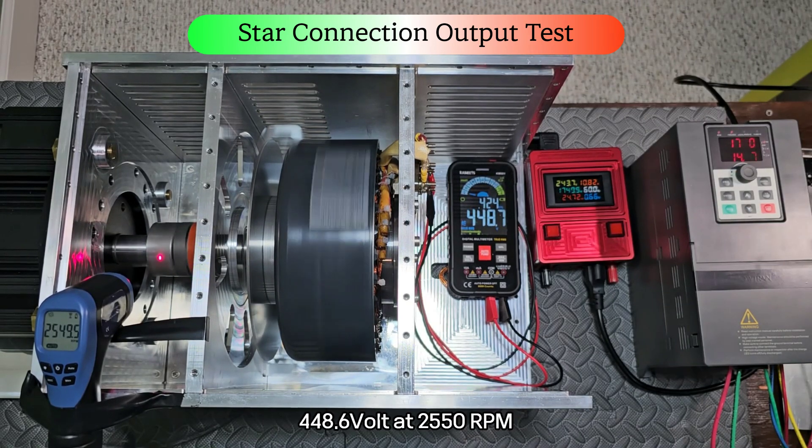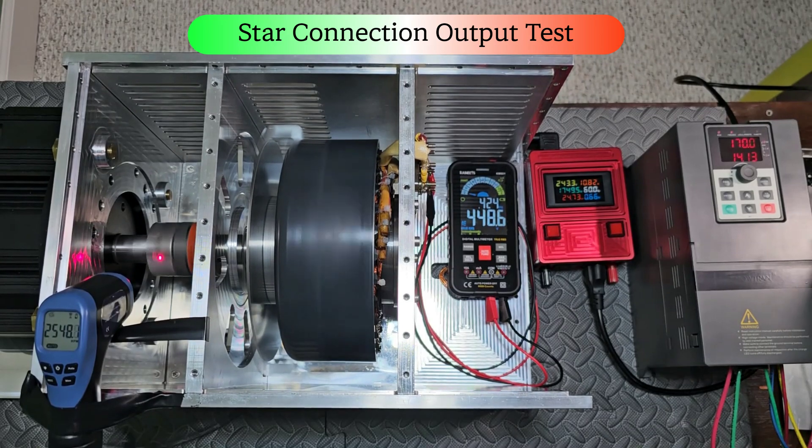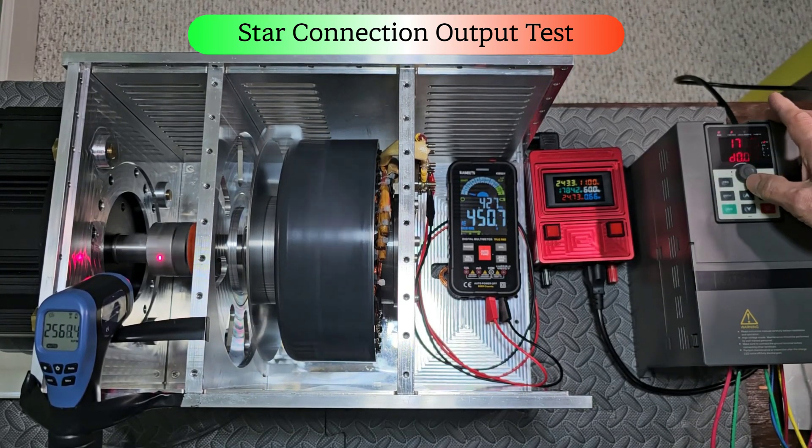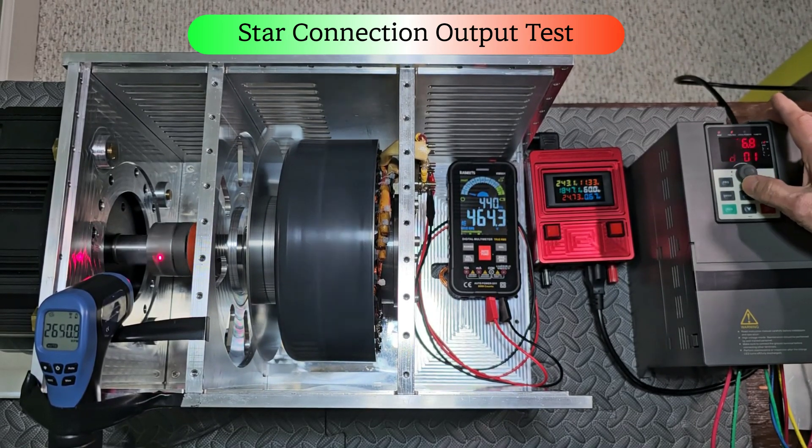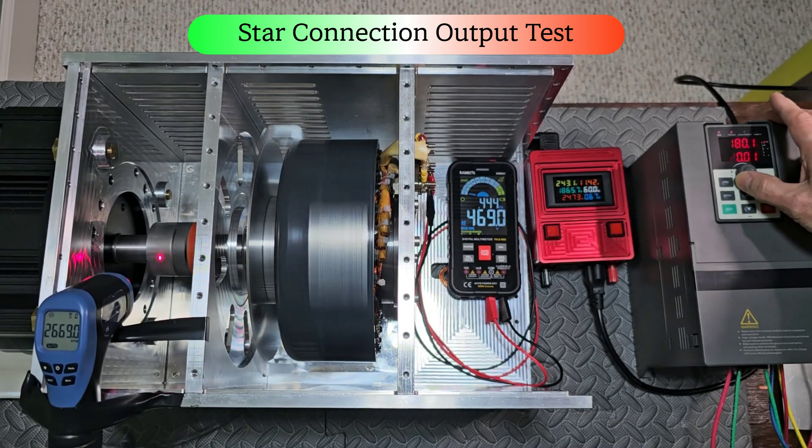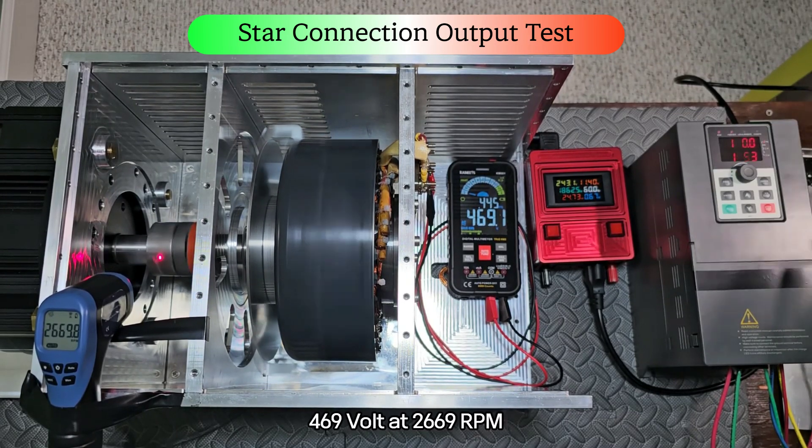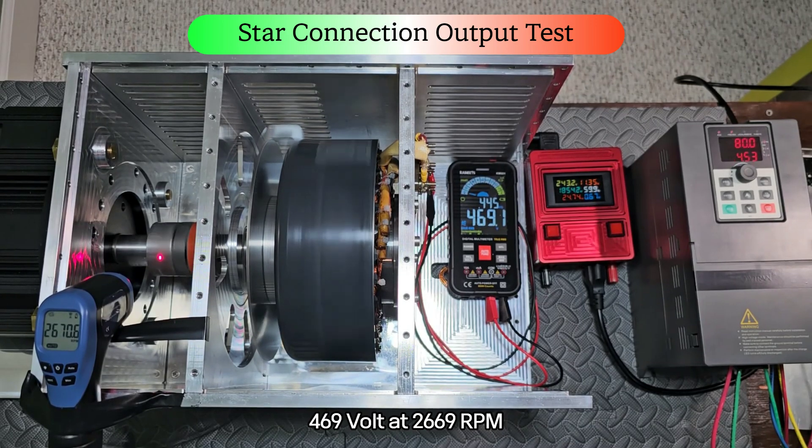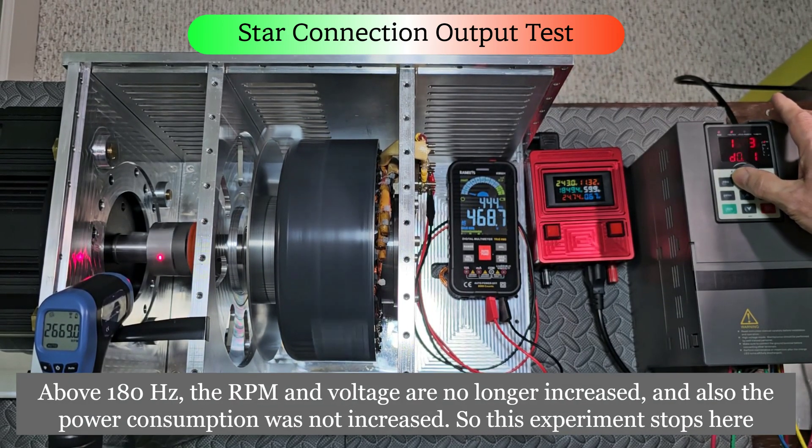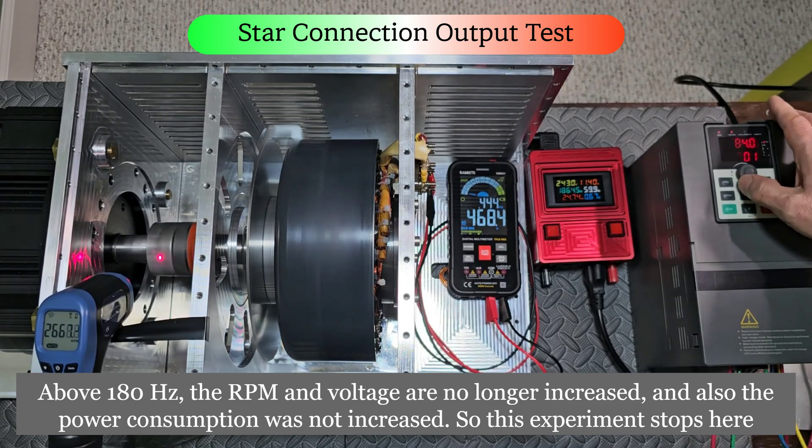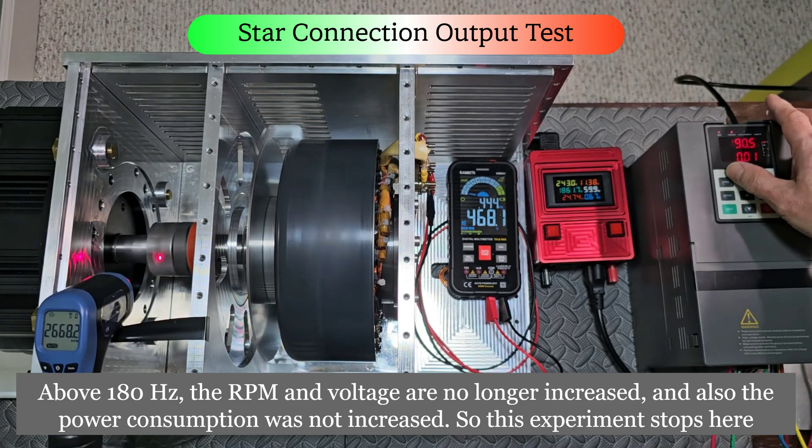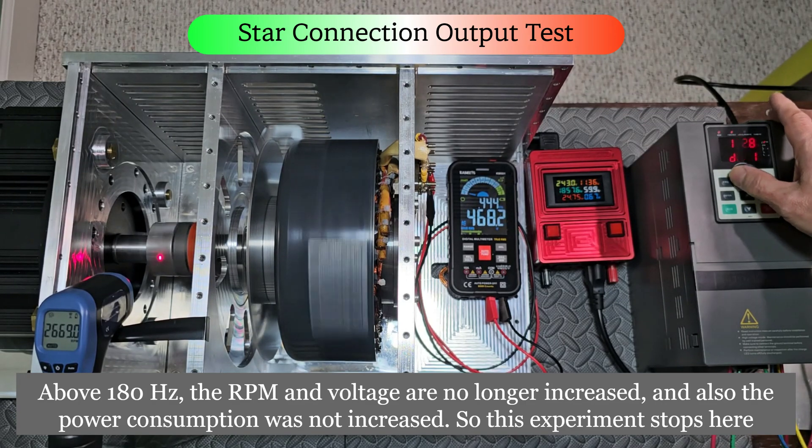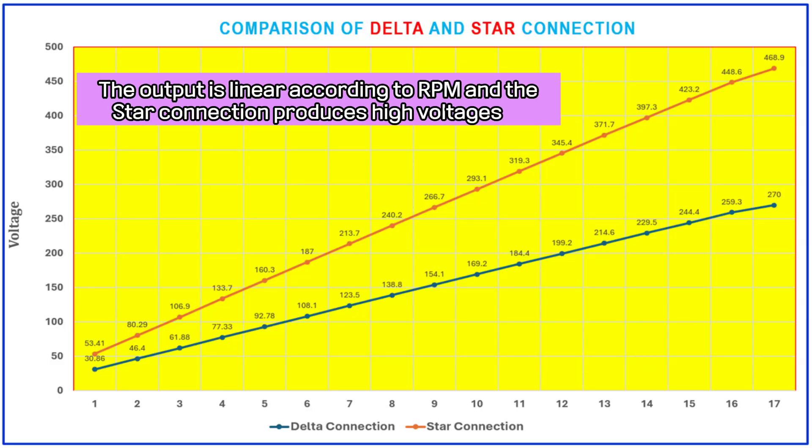The output is 423.2 volts at 2400 RPM, 160 hertz. System uses 1494 watts now. 448.6 volts at 2550 RPM. 469 volts at 2669 RPM. And also the power consumption was not increased. So this experiment stops here. The output is linear according to RPM, and the star connection produces high voltages.